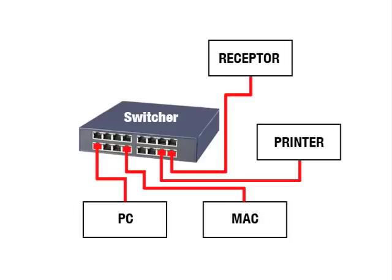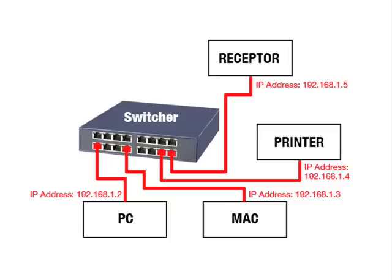Every device in your network needs to have a unique IP address. Since you're not using a DHCP server to provide those addresses, you'll need to manually assign them to the various devices. Here's how you do this on Receptor.